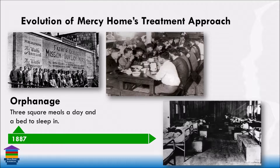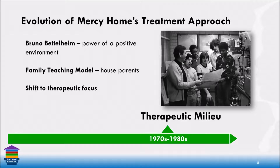We started with the three square meals a day and a bed to sleep in — and both of those rooms are actually in this building. We adopted the concept of the therapeutic milieu, really popularized by Bruno Bettelheim, talking about the power of a positive environment to affect change in people's lives who have been hurt or traumatized. His thinking was that if you take them out of a not-so-positive environment and put them in a positive one, it'll have a positive effect. Every interaction has the potential to be meaningful and therapeutic.